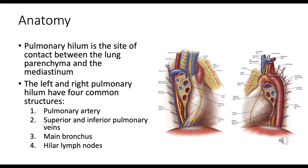Structures passing through the hilum include: the pulmonary artery, which carries deoxygenated blood from the heart to the lungs — usually located superior to the bronchus and the most anterior structure; and the superior and inferior pulmonary veins, which transport oxygenated blood from the lungs back to the heart, typically found inferior to the bronchus.